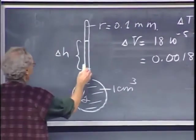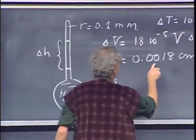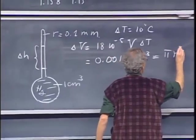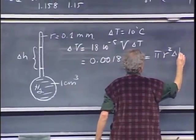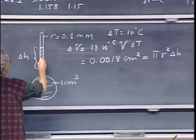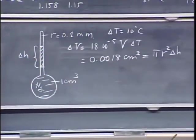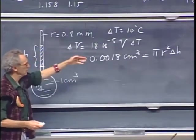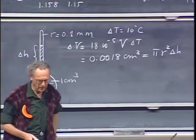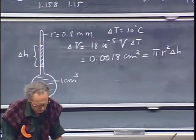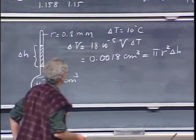And so if the mercury then changes its height by an amount delta H, and if this is a tube with a radius 0.1 millimeters, then this amount of mercury must be the same as pi r squared times delta H, which is the volume of the new column, the increase in the column. And so you take your 0.1 millimeters, and you will find that delta H, for this example that I chose, is 5.7 centimeters.